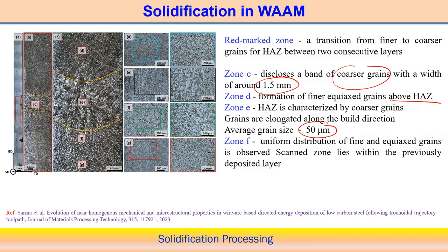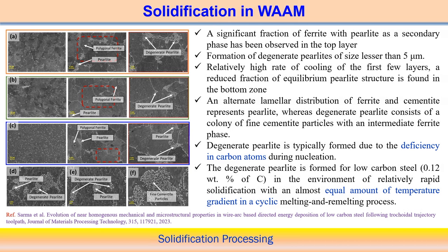In the heat affected zone, fine equiaxed structure is found above it, while elongated grains are observed within the HAZ itself. Even in other positions, grain size is less than 50 µm. Looking at the macrograph of the overall structure in the deposited component and zooming in further, different types of microstructure form in the low carbon steel.